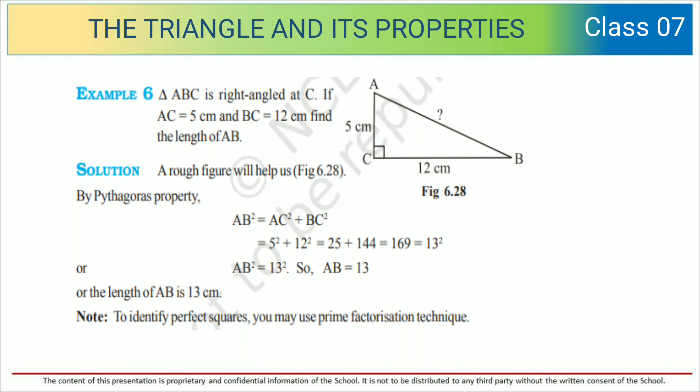5² plus 12² equals 25 plus 144, which equals 169, equals 13². So AB² equals 13². Therefore, the length of AB is 13 cm.